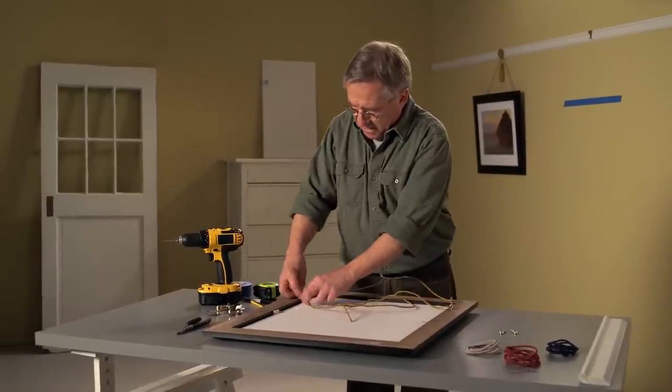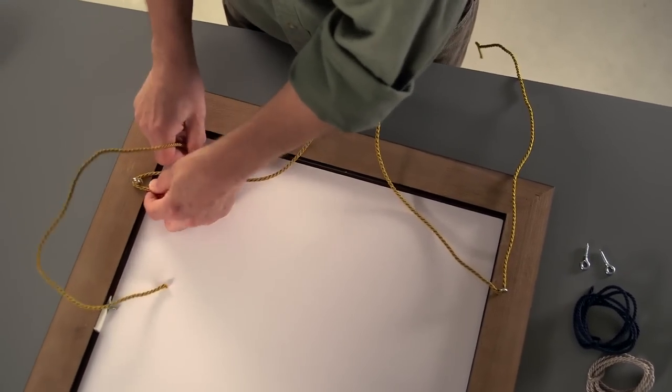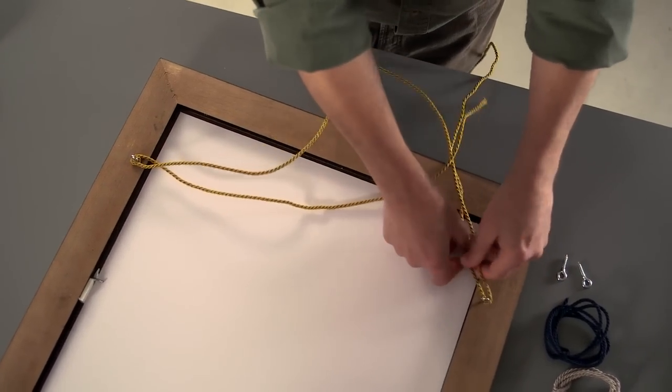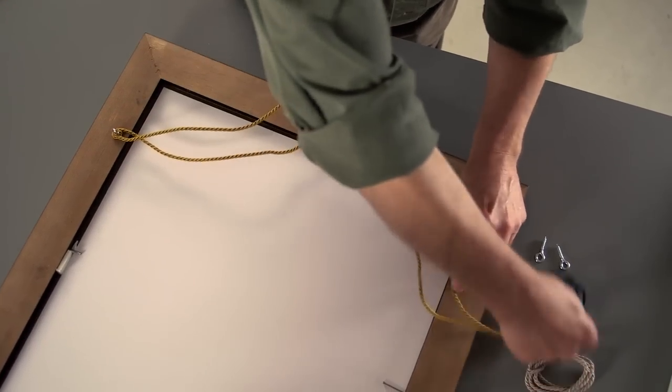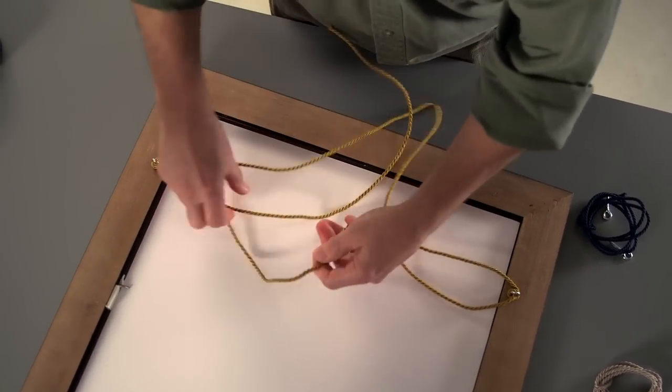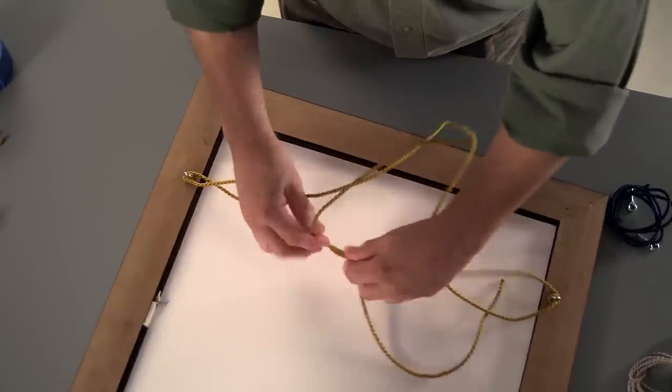You can take and wrap the cord once around the eyelet if you want because you want to secure it a little bit so that when you tie these two ends together in the middle, you can pull it taut so that you don't have any slack because that will change the height of your picture.